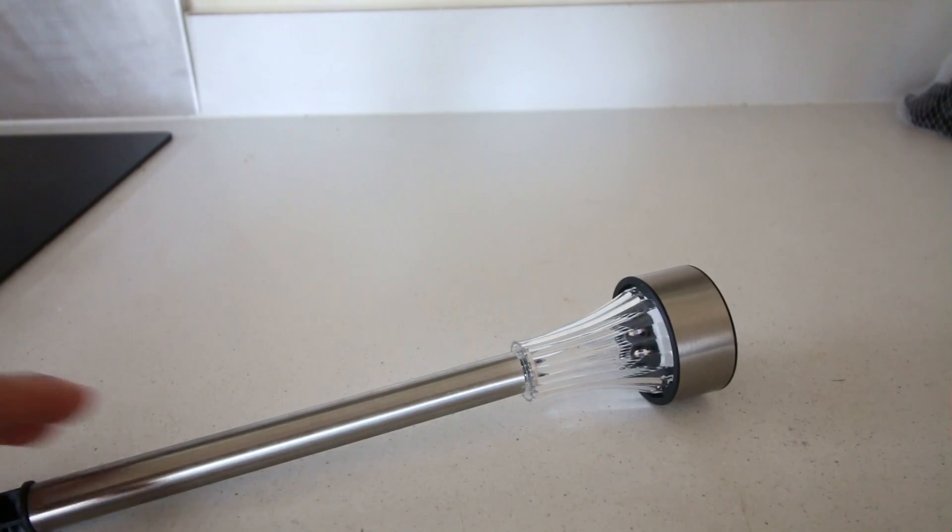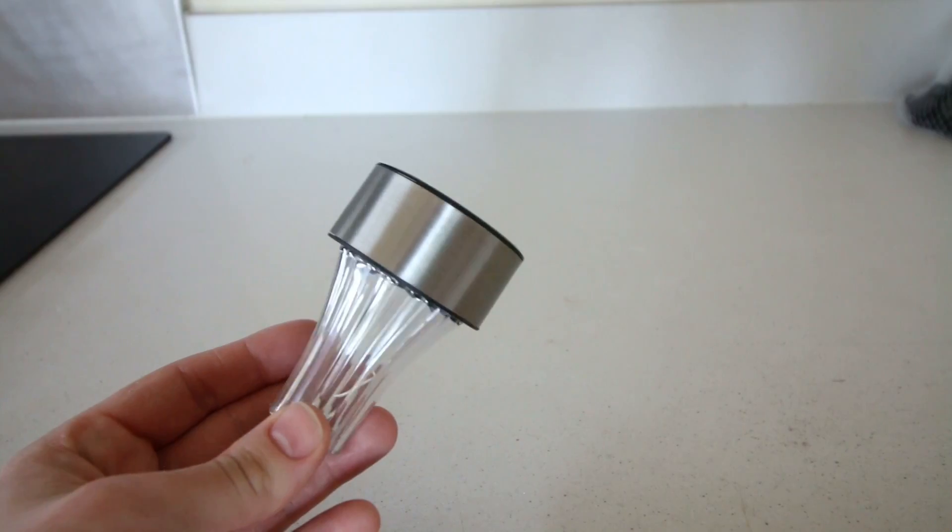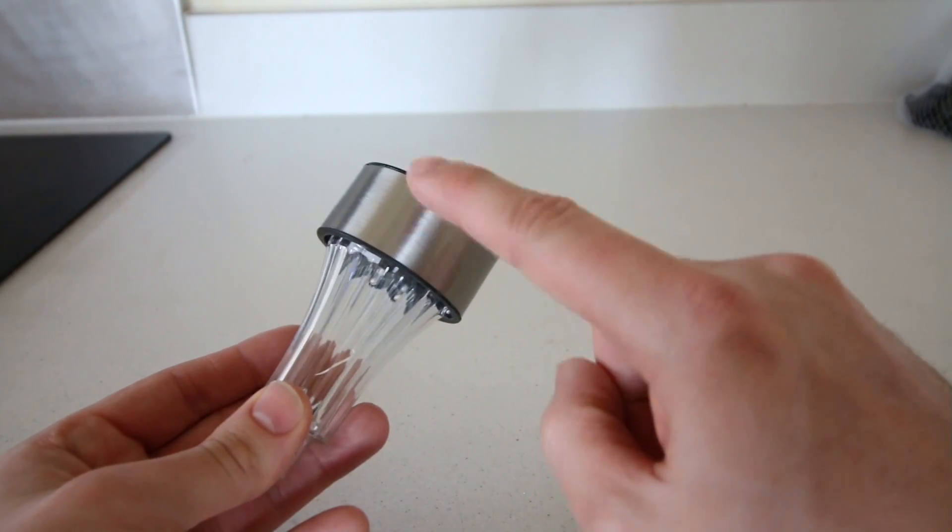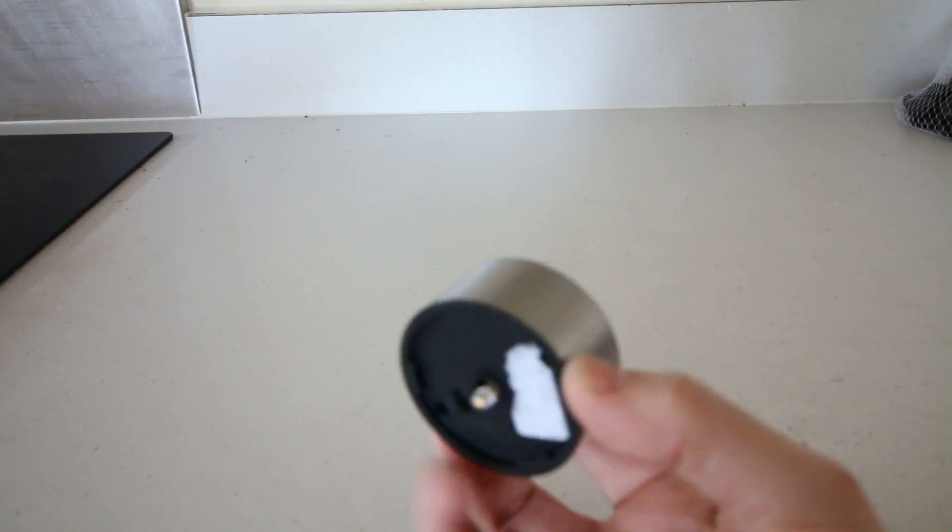Next, I took apart the solar lights. Most of them have this circular piece on the top which houses the solar panel and the LED. This is the piece that you'll need.